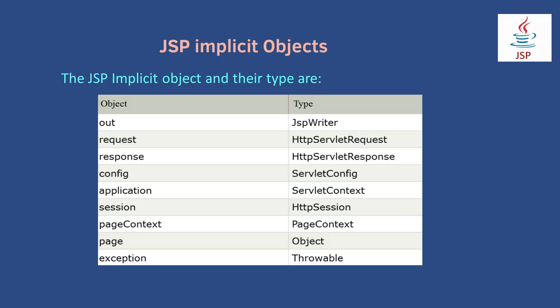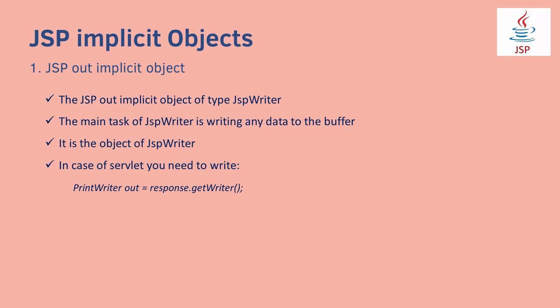The GSP implicit objects and their types are: Out is of type JSP Writer; Request is of type HttpServletRequest; Response is of type HttpServletResponse; Config is of type ServletConfig; Application is of type ServletContext; Session is of type HttpSession; Page Context is of type PageContext; Page is of type Object; and Exception is of type Throwable.